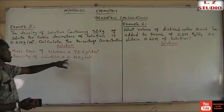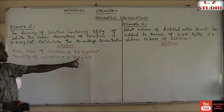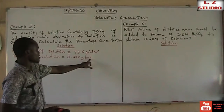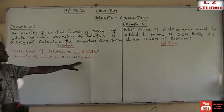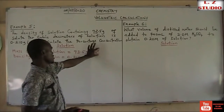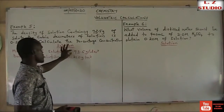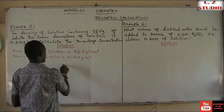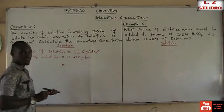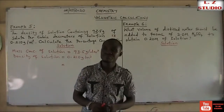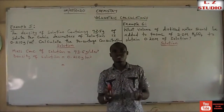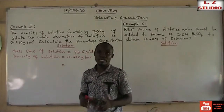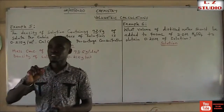We cannot calculate the percentage concentration with the density in 0.210 g/m³, so we have to convert our density unit to be in line with the mass concentration unit. In our previous lessons, we said that if you are converting cm³ to dm³, you divide by 1000.